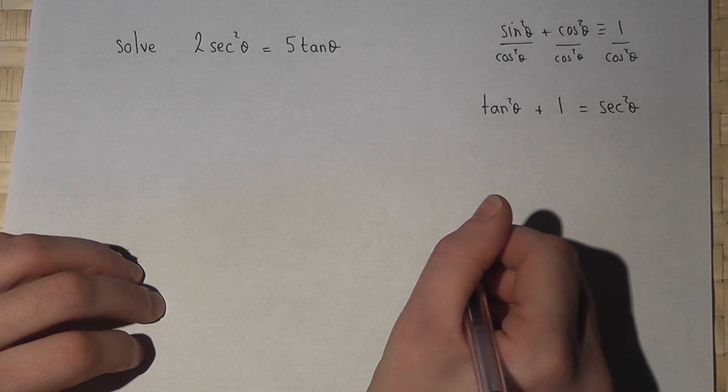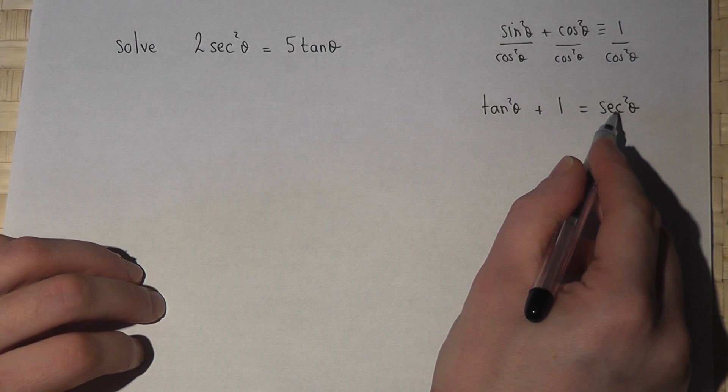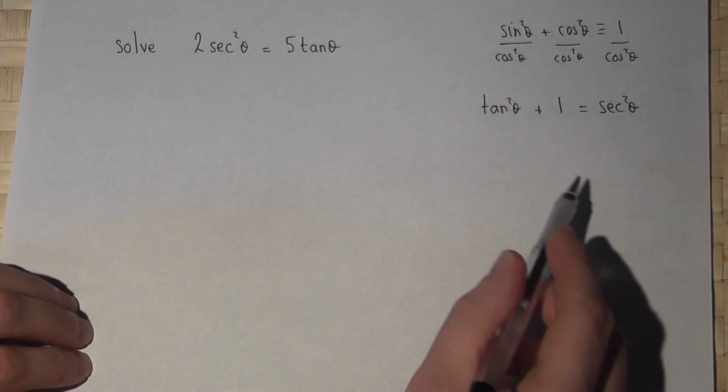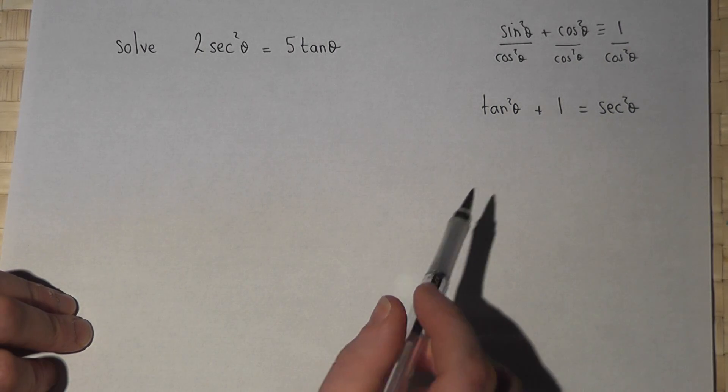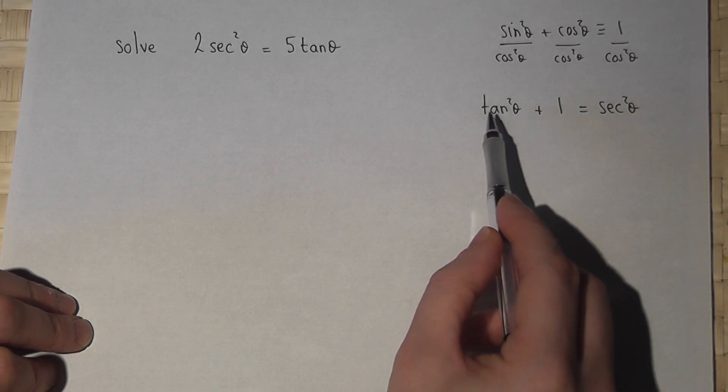I therefore know that sec squared theta is tan squared theta plus 1. So back to the equation here, I can replace sec squared by tan squared plus 1.